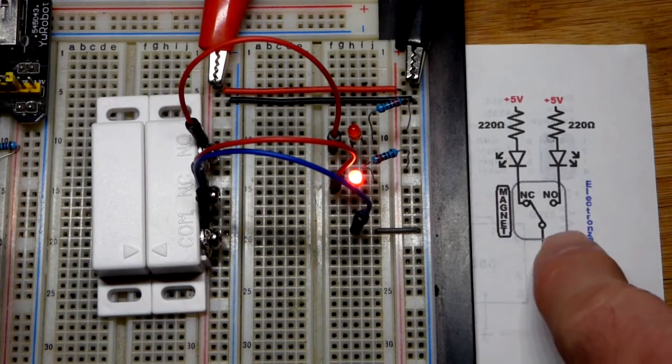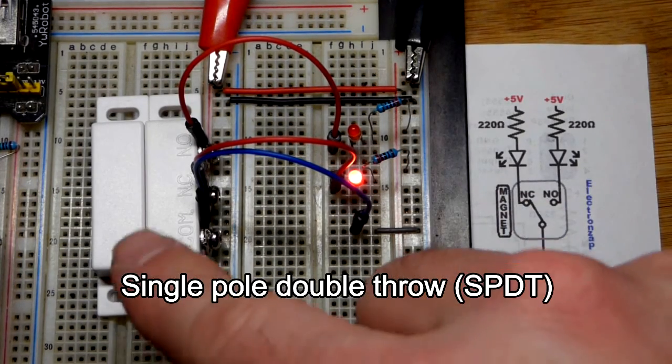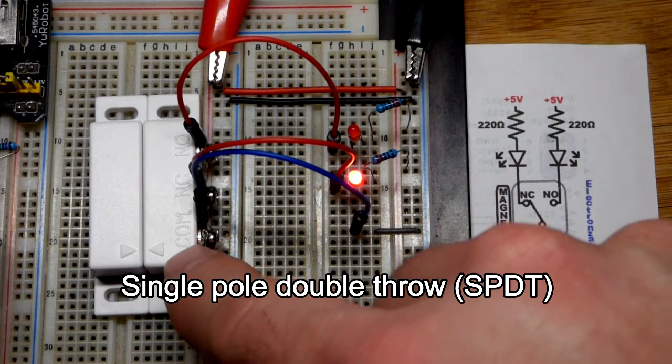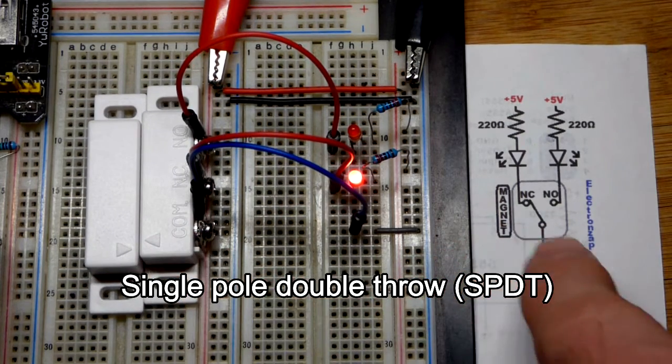So now in this video we're going to take a look at another single pole. There's a single piece of metal that's always connected to this common terminal right there.